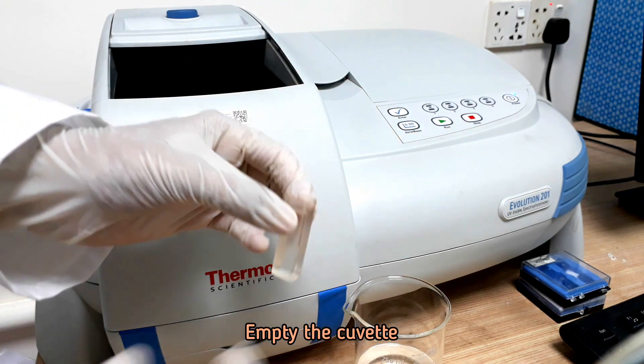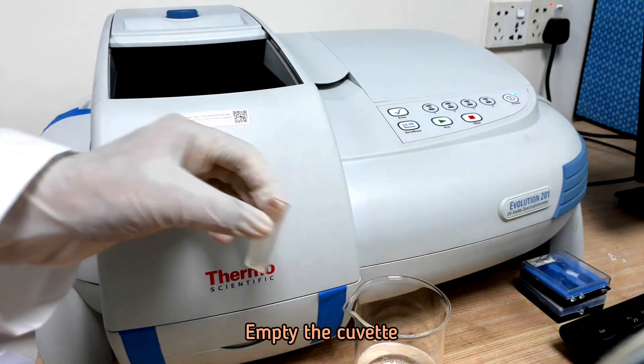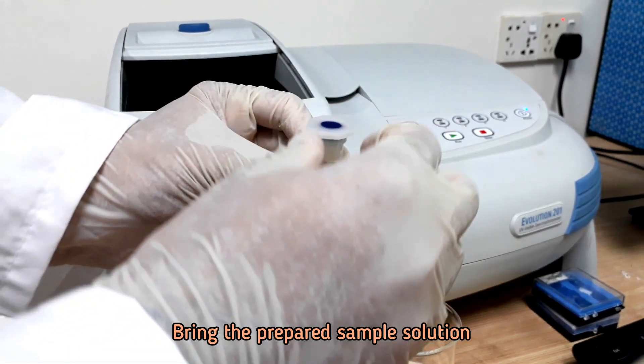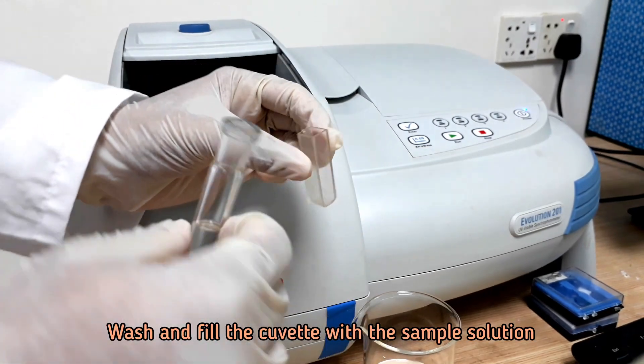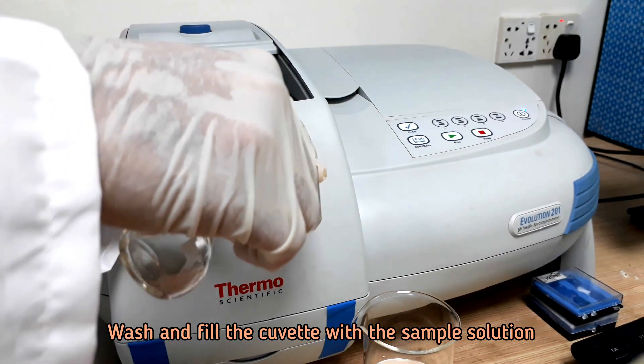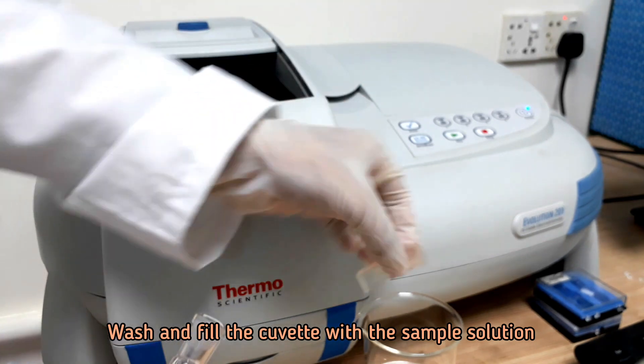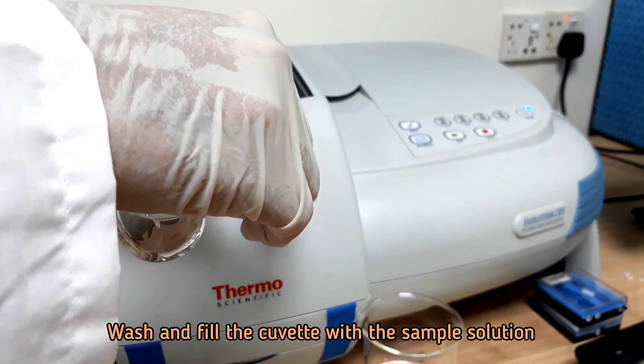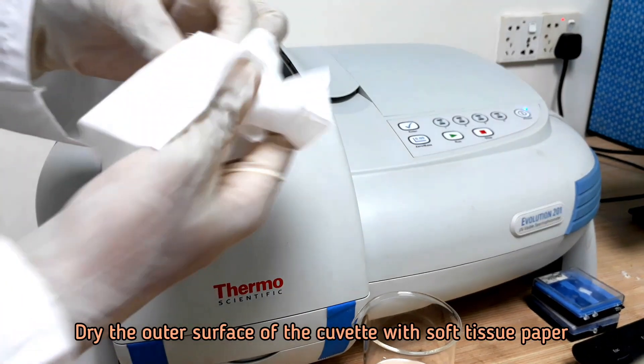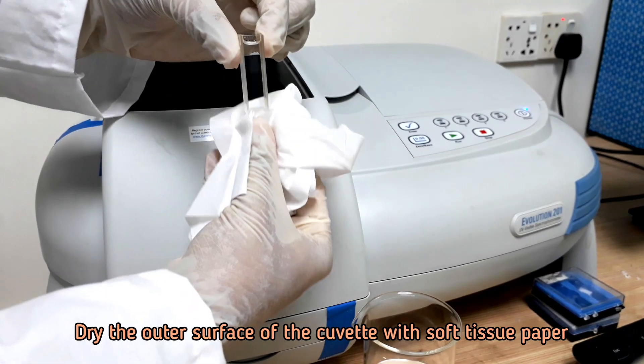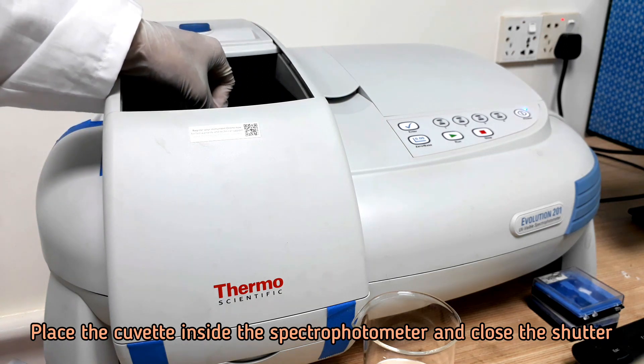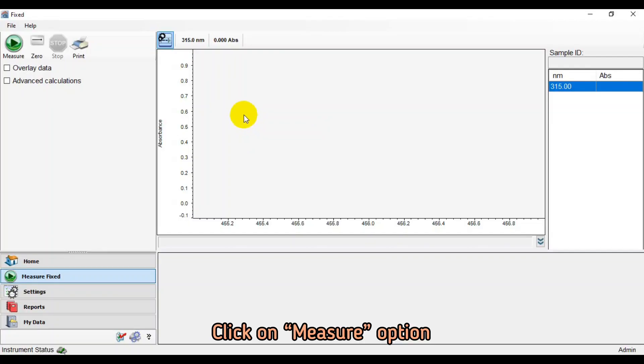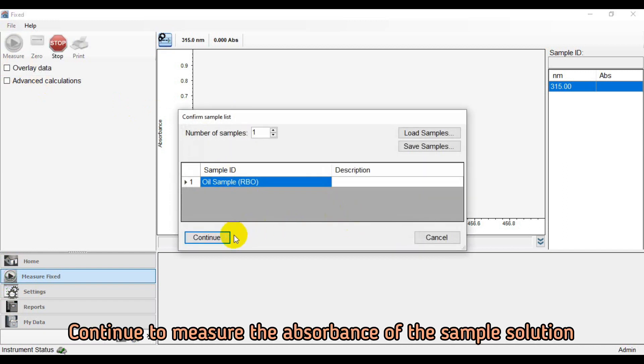Now empty the cuvette and bring the prepared sample solution. Wash and fill the cuvette with sample solution. Dry the outer surface of the cuvette with soft tissue paper. Click on Measure option and continue to measure the absorbance of the sample solution.